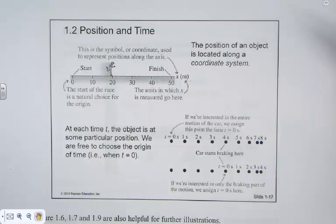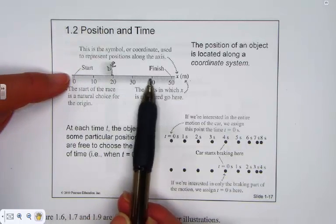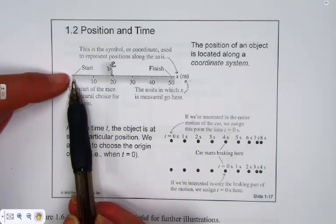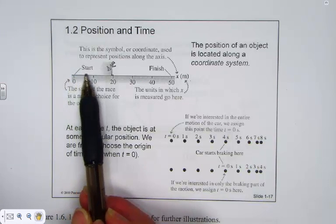Now, at each time, the object is at some particular position. And we're free to choose the origin of time. Typically, we start with time equals zero. But sometimes, it makes sense to consider a different position. Let's consider the following. We understand that at time zero, notice this is equal distance, a runner begins the race. As a runner begins the race, if they're not moving and begins, they start to speed up.